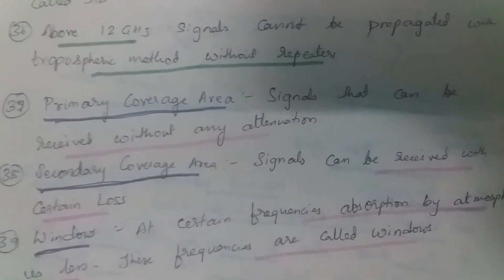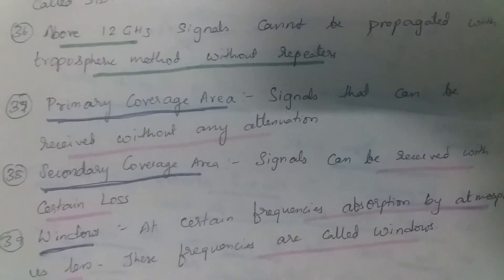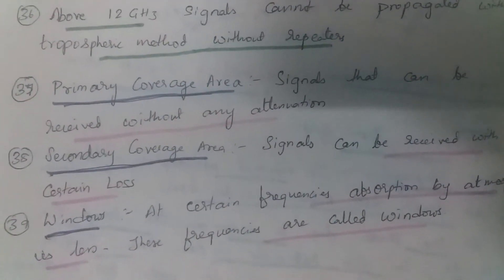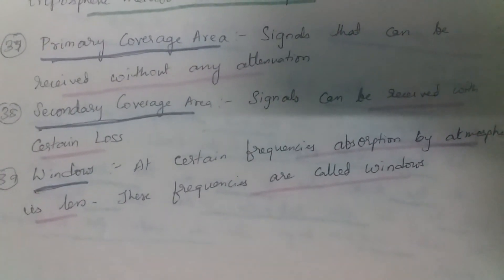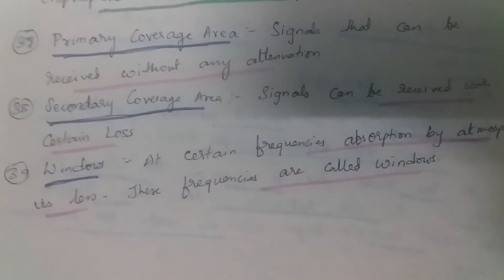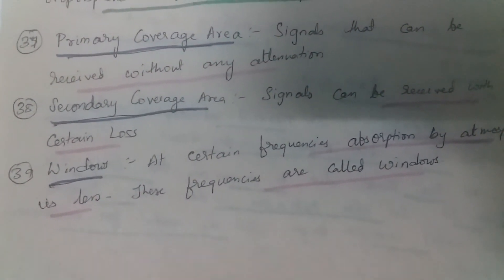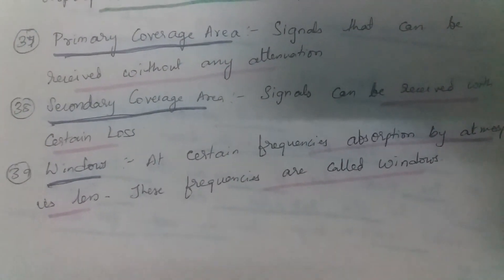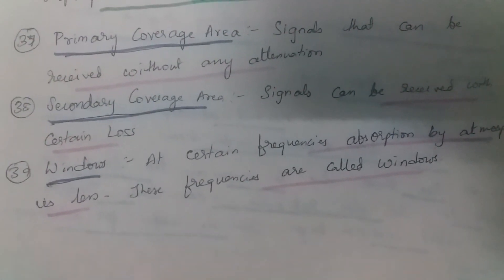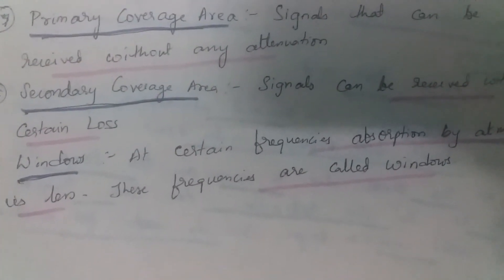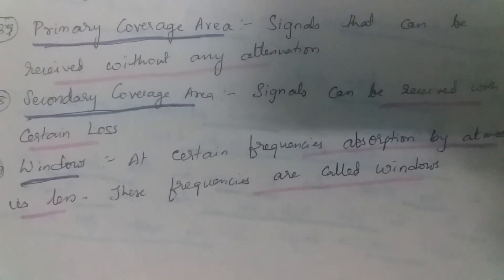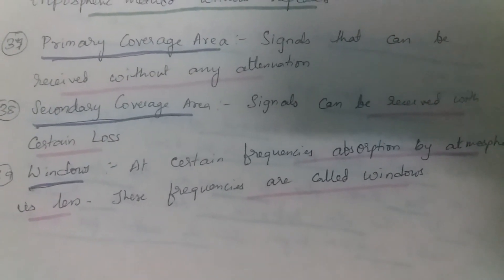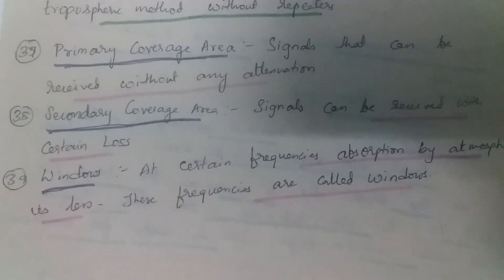About 12 gigahertz signals cannot be propagated using the troposphere method without repeaters. Primary coverage area refers to signals that can be received without attenuation. Secondary coverage area is the area where signals are received with some loss. At certain frequencies, absorption by the atmosphere is very less — these frequencies are called windows.